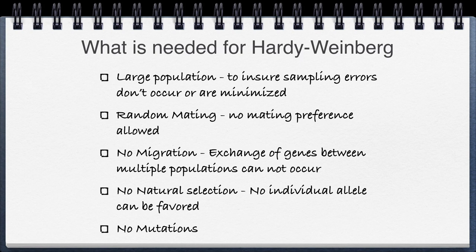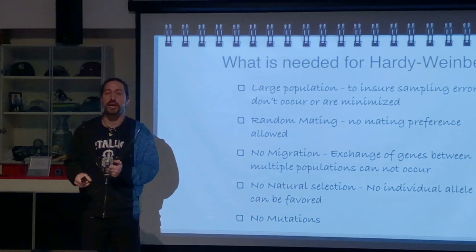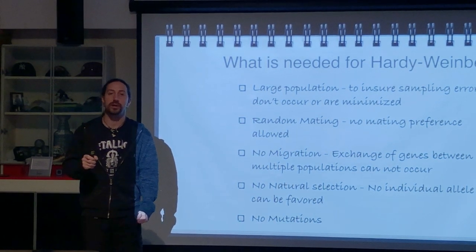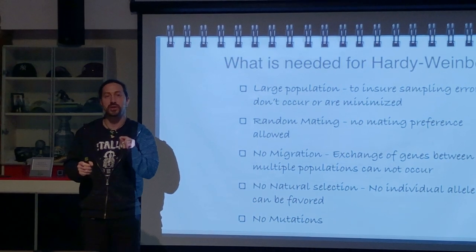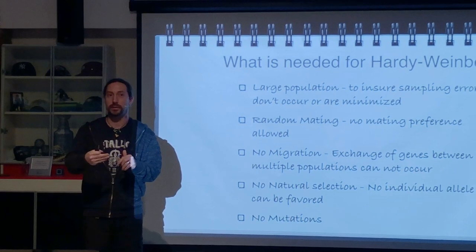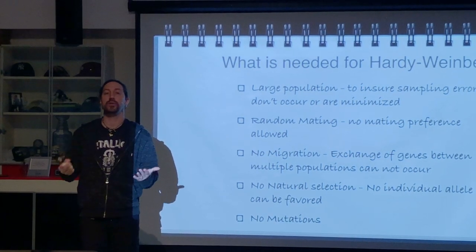Fourth, no natural selection can occur — all organisms must be able to survive equally. If a trait is disfavored, it could disappear and change allele frequency. And fifth, there can be no mutations. Every time a mutation occurs in a specific gene, it creates a new allele, and you cannot have new alleles created and still keep allelic frequencies stable.